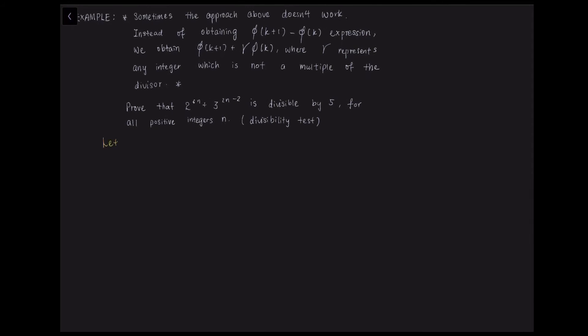So we first let phi n equals to 2 to the power of 6n plus 3 to the power of 2n minus 2.